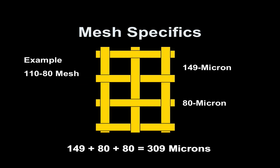For instance, a 110-80 mesh — that's 110 threads per linear inch with an 80 micron thread diameter before weaving — made by CIFAR, has a mesh opening of 149 microns and a thread diameter of 80 microns, for a total of 309 microns. This information is available from your mesh manufacturer.